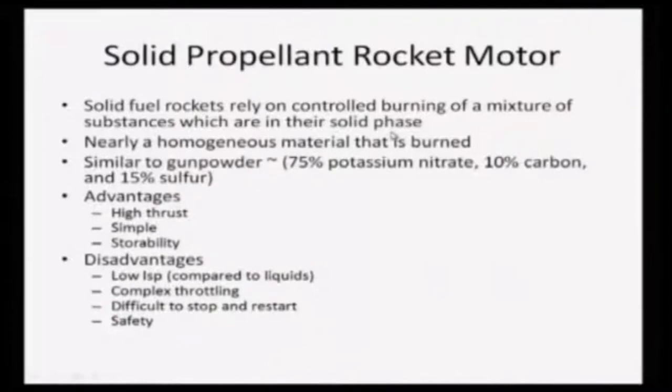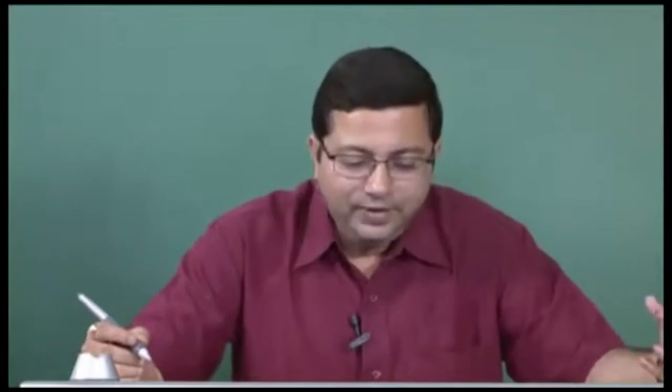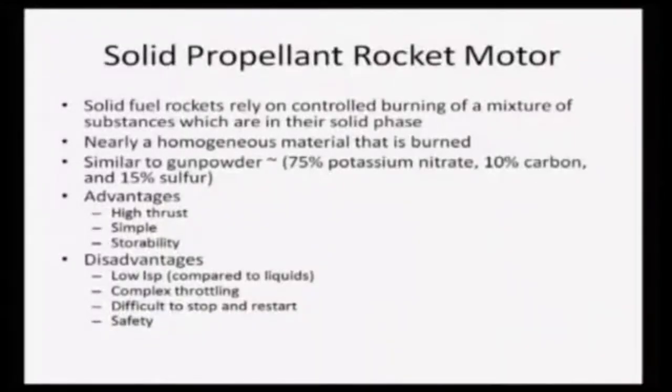Typically, the entire solid propellant mixture is fairly homogeneous, so nearly homogeneous material is burned. The composition of this propellant is quite similar to gunpowder — about 75 percent potassium nitrate, 10 percent carbon, and 15 percent sulfur. Solid propellant rockets will have a slightly different or sometimes even drastically different composition, but essentially all of them will be in the solid state.